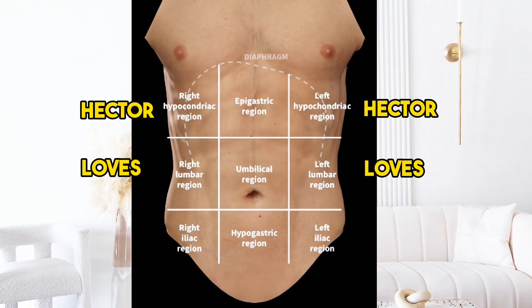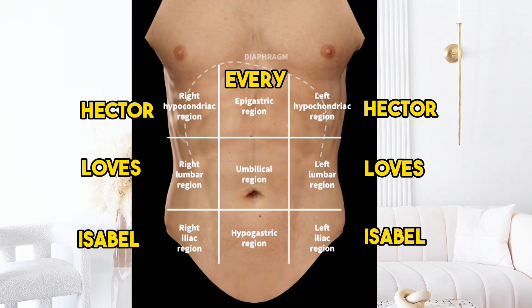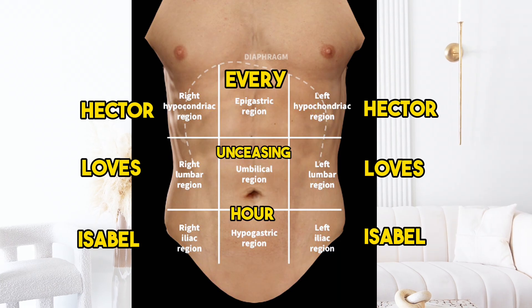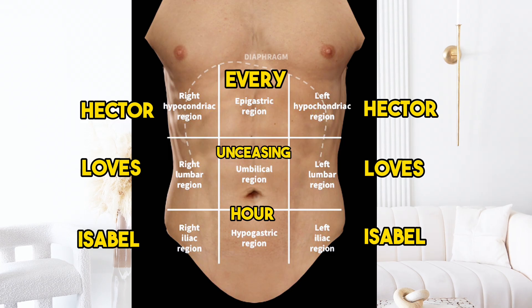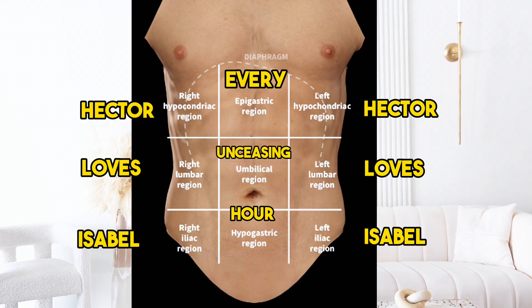Here's a handy mnemonic to remember these regions: 'Hector loves Isabel every unceasing hour.' H is for hypochondriac, L is for lumbar, I is for iliac, E is for epigastric, U is for umbilical, and H is for hypogastric.